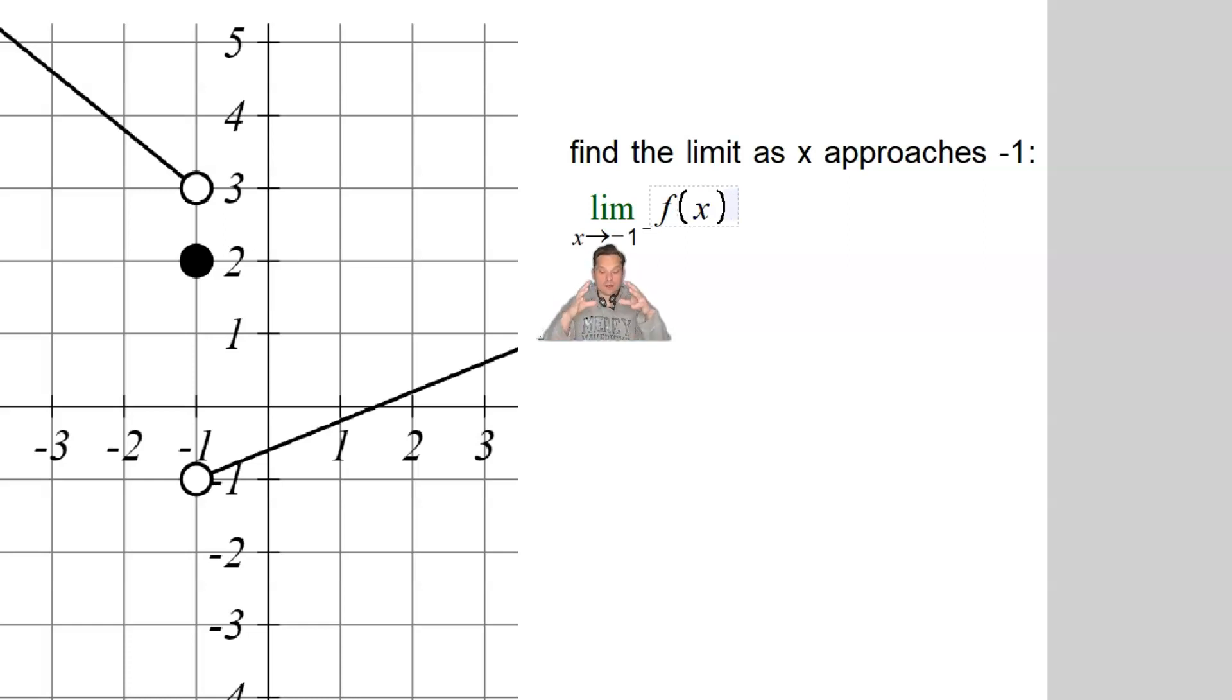I want to know the value of the limit as x approaches negative 1 from the left. So let's look at the graph very carefully. Let's draw in some details on the graph that would be hopefully constructive. So what this means is that x is going to come towards negative 1 from this direction, from the left side. That means that the points on the graph would travel along this direction, towards the hole.